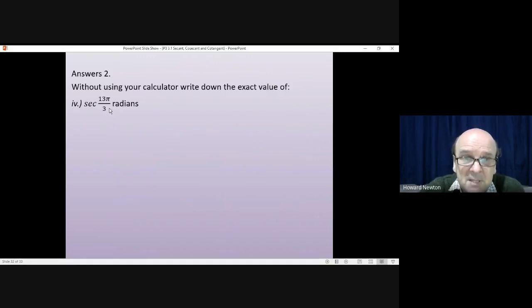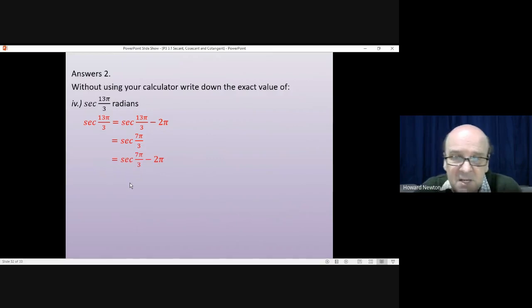360 degrees is 2 pi radians. So the first thing I'd probably do is just take away 360 degrees, take away 2 pi radians, because I know it'll be the same answer. A little bit of fraction work here. That'll be taking 6 pi over 3. 13 take away 6 gives me 7 pi by 3. And then I can do the same thing again, take away another 2 pi radians. So that's taking away another 6 pi over 3. And that'll take me down to pi by 3.